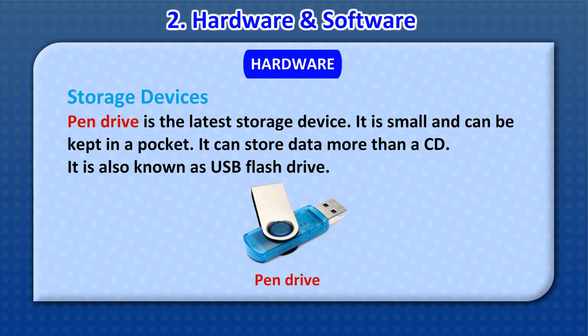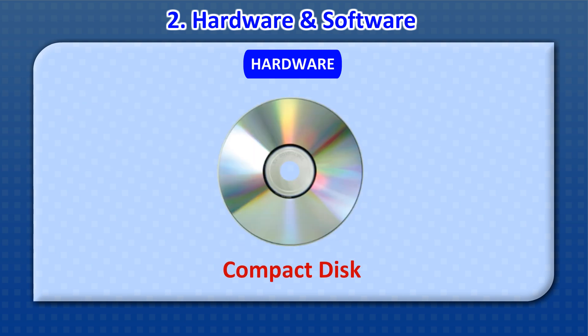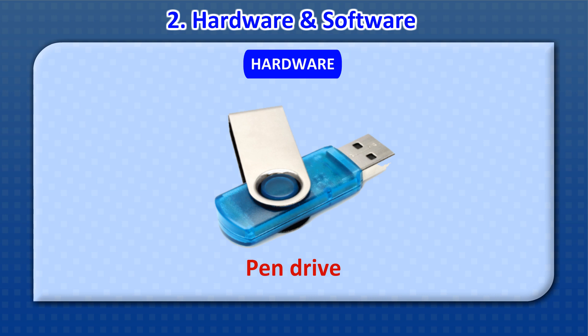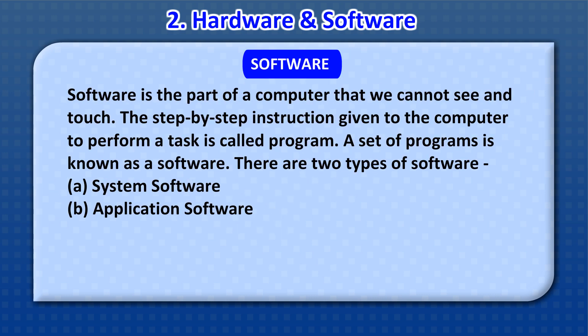The pen drive is also known as a USB flash drive. Software is the part of a computer that we cannot see and touch. The step-by-step instructions given to the computer to perform a task are called a program. A set of programs is known as software.